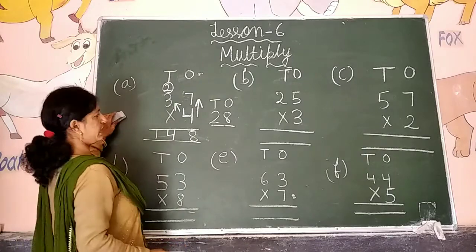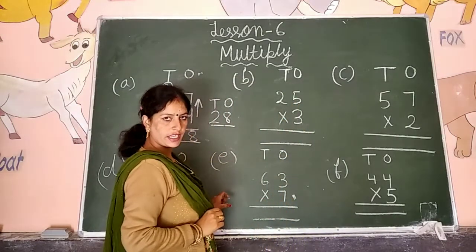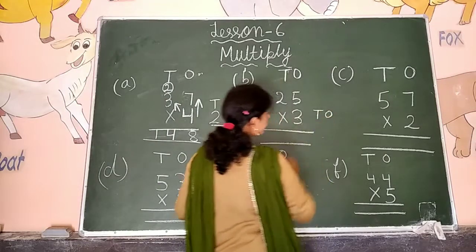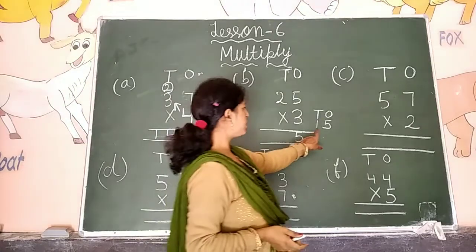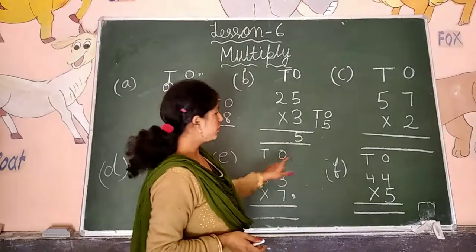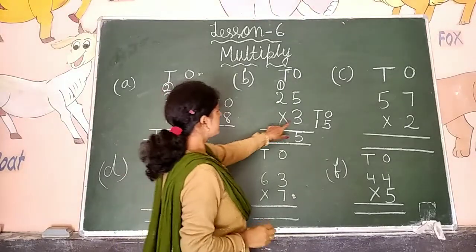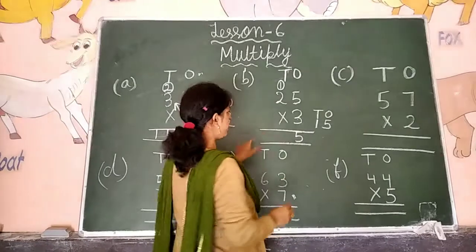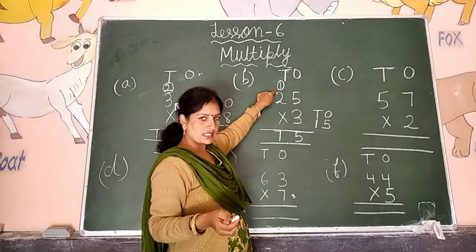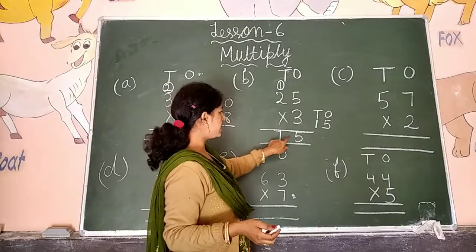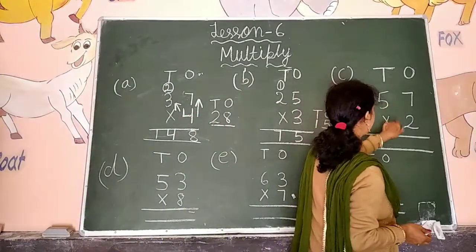Next question: three fives are fifteen. Fifteen — we write five below the ones place, and one is the carry over, written below the tens place. Then three twos are six, plus the carry over one — that is seven. So the answer is seventy-five.